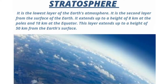Stratosphere. The stratosphere is the second layer from the surface of the earth. It extends up to a height of eight kilometers at the poles and 18 kilometers at the equator. The layer extends up to a height of 50 kilometers from earth's surface.